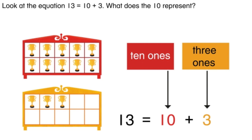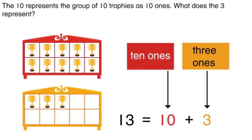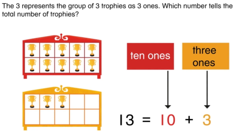Look at the equation: 13 equals 10 plus 3. What does the 10 represent — the red case or the yellow case? You got it! The 10 represents the red case — the group of 10 trophies as 10 ones. What does the 3 represent? You got it — the trophies in the yellow case. The 3 represents the group of three trophies as 3 ones. The number 13 tells the total number of trophies — 13 in all. Great job!